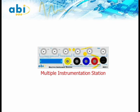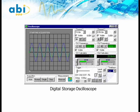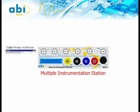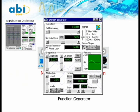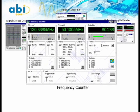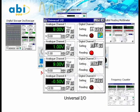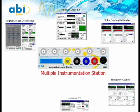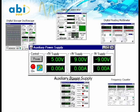The fifth module is the Multiple Instrument Station. The MIS provides eight high-specification test and measurement instruments in one compact module. The MIS offers a two-channel 100MHz digital storage oscilloscope, a 10MHz function generator, a dual-channel digital floating multimeter, a 100MHz frequency counter, universal I/O for acquisition and generation of signals, and an auxiliary power supply.